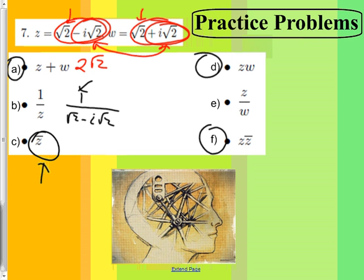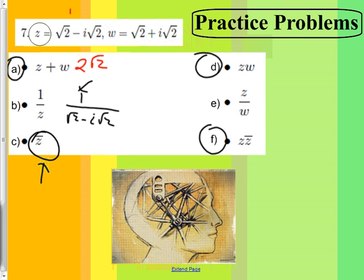Skipping B for now, moving to C: what is the conjugate of Z? Here's Z — the conjugate is the exact same thing except with a plus in the middle instead of a minus. That way, when you multiply it by regular Z, good things happen.